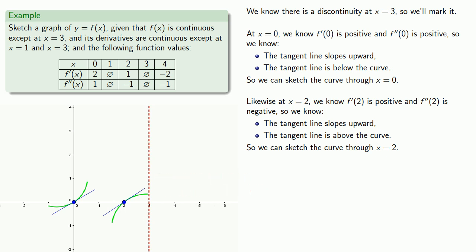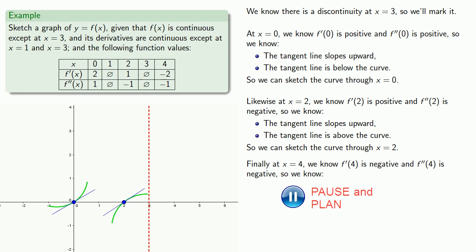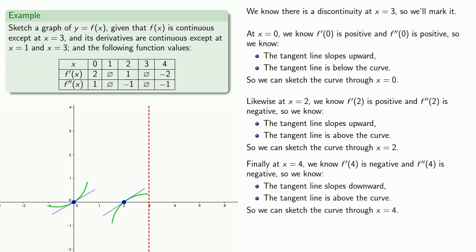At x equals 4, we know the first derivative is negative and the second derivative is negative. And we can sketch the curve through x equals 4.